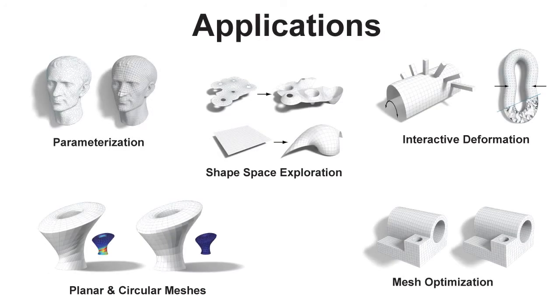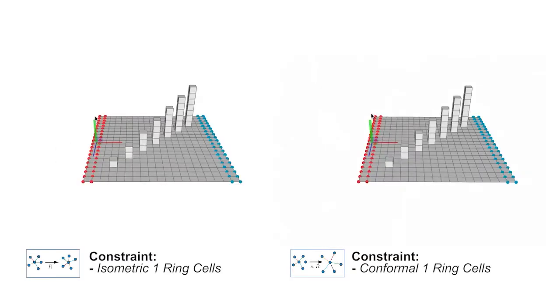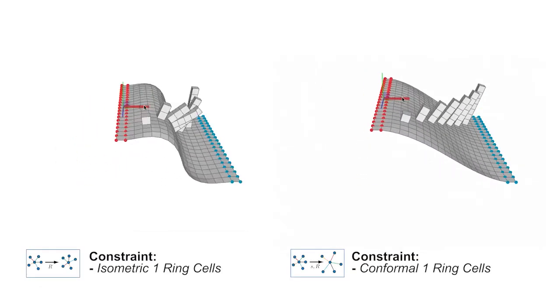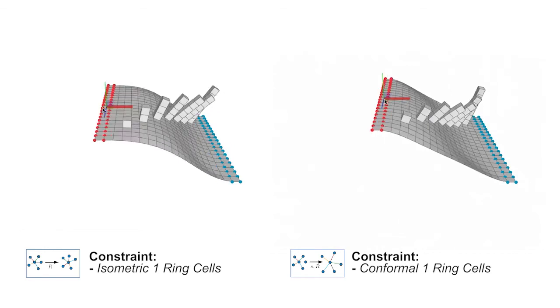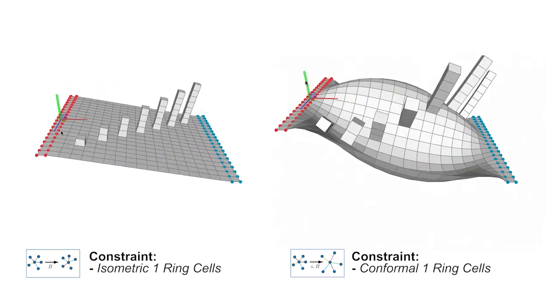We now show several applications that could be implemented with our approach. Shape preserving deformations aim at preserving important geometric features during deformation. Here we show rigid and similarity constraints imposed on the one-ring cells, leading to near-isometric and near-conformal deformations.